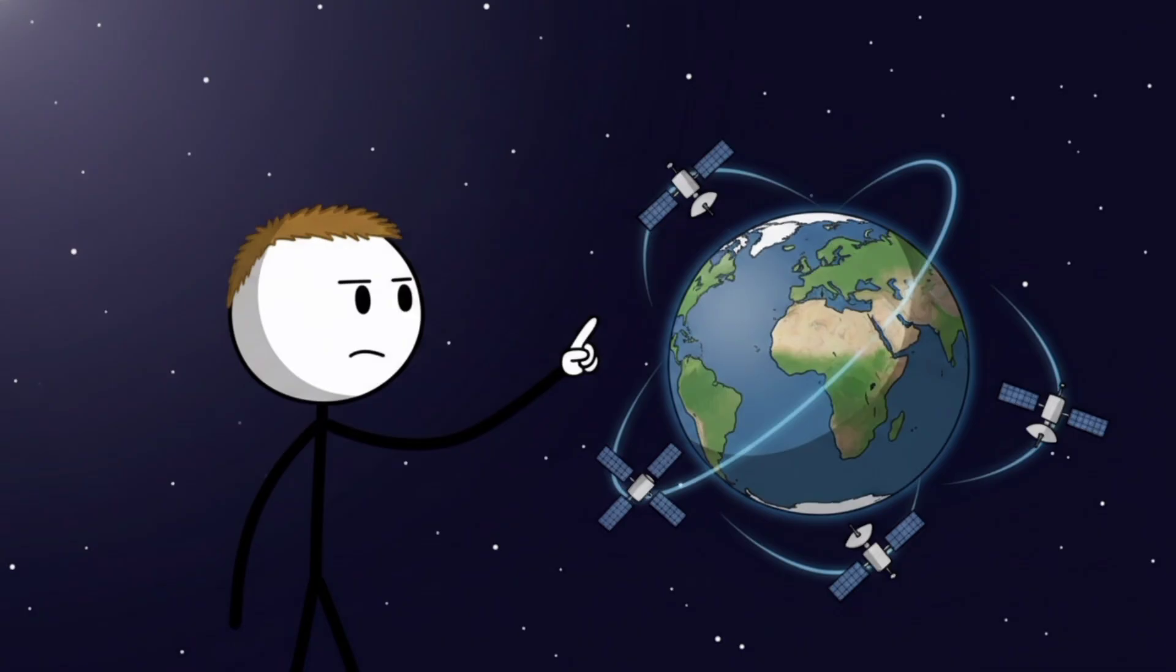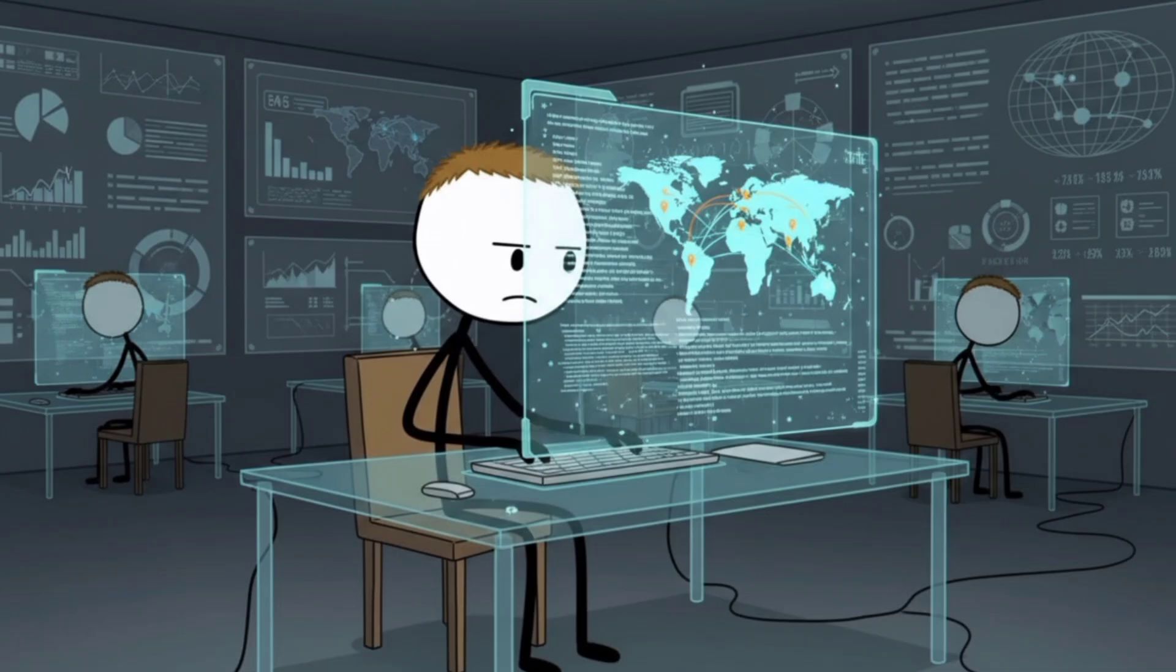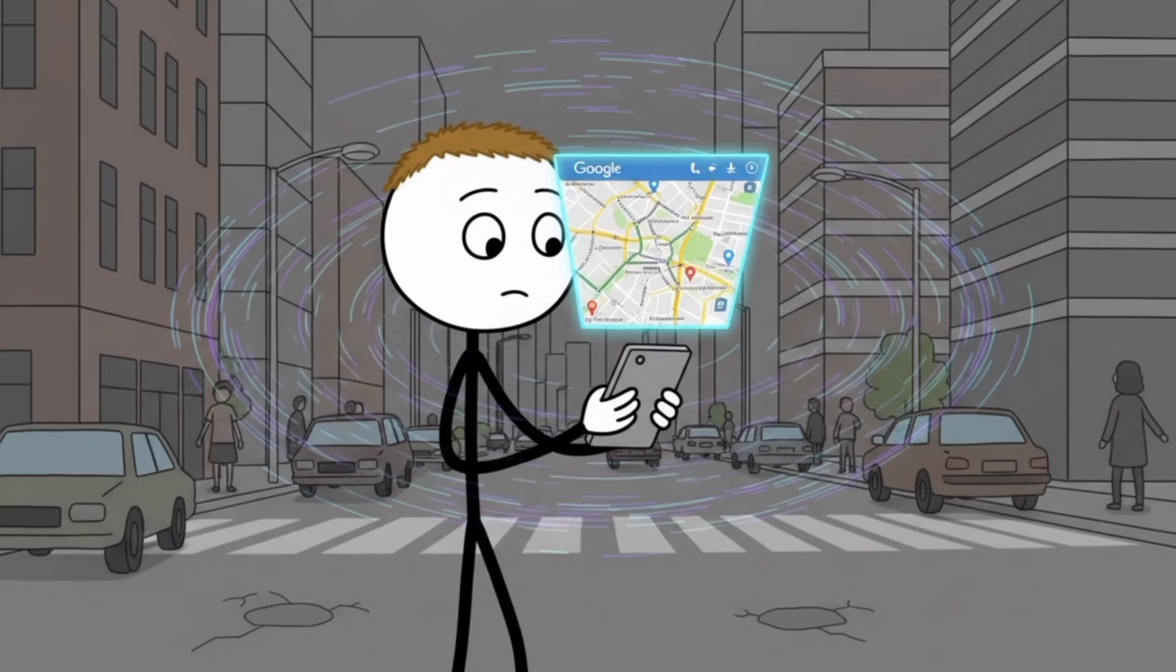GPS satellites prove this every single day. They're moving so fast in orbit that time runs differently for them than for you on Earth. If engineers didn't program Einstein's equations into the system, your navigation would be off by miles within minutes. Every time Google Maps works, you're experiencing proof that time travel is real.